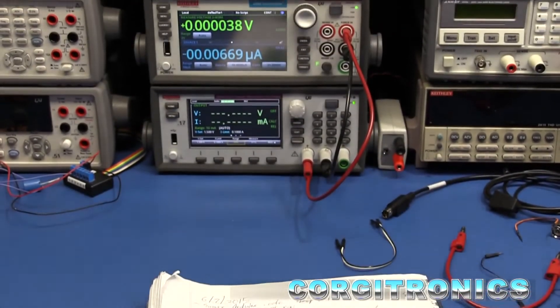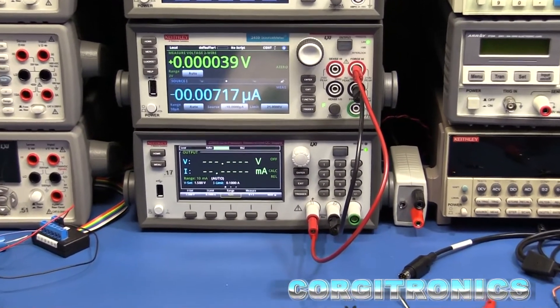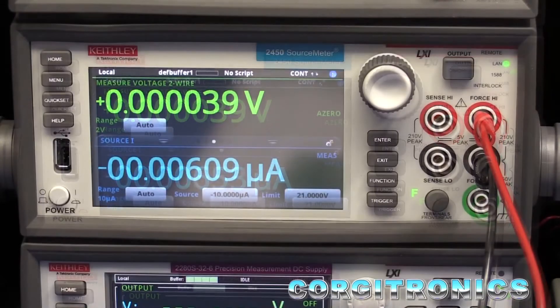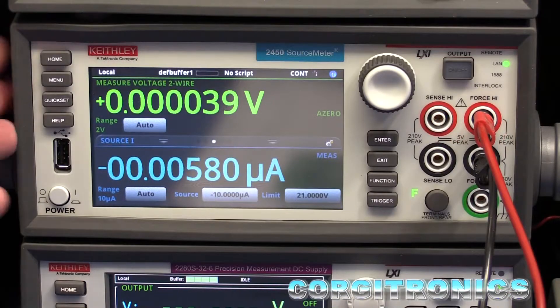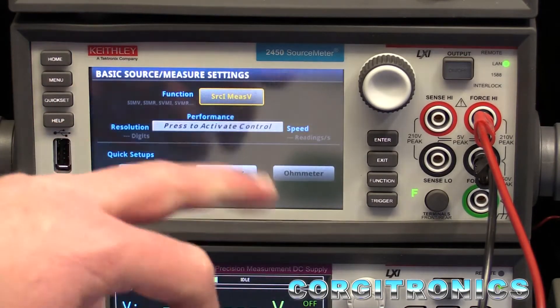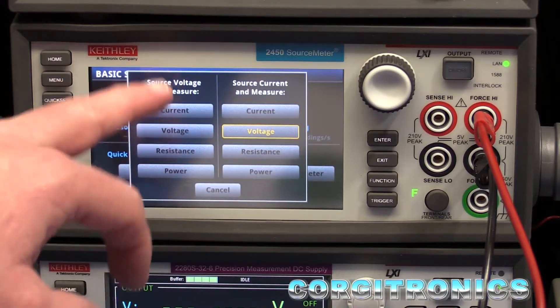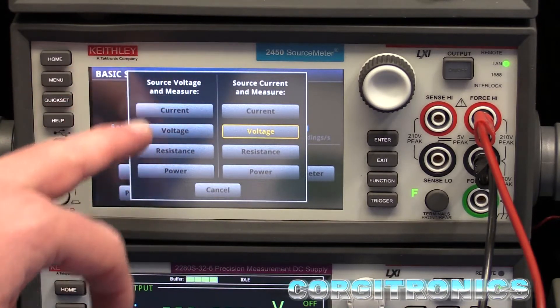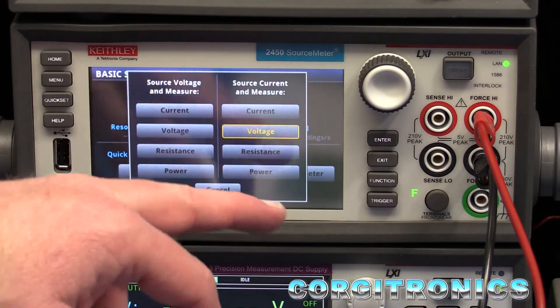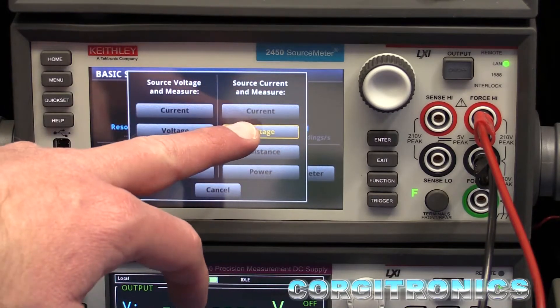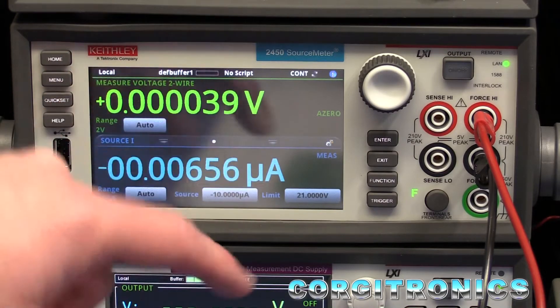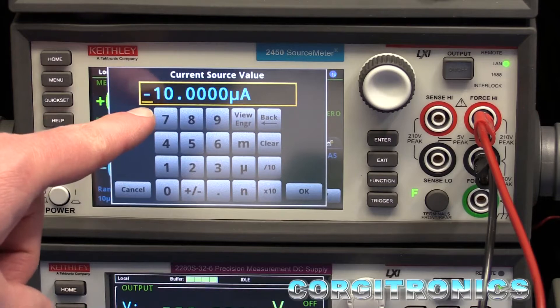What we're going to use today is a source meter as the load. This is what I got a while back and now it's time to put it to use. So what is a source meter? In this case, it's a six and a half digit device, at least from a measurement perspective. It can source voltage and measure another parameter such as current or voltage. It can also source current and measure voltage or power. Something interesting happens when you go into sourcing current - you can set a negative number.